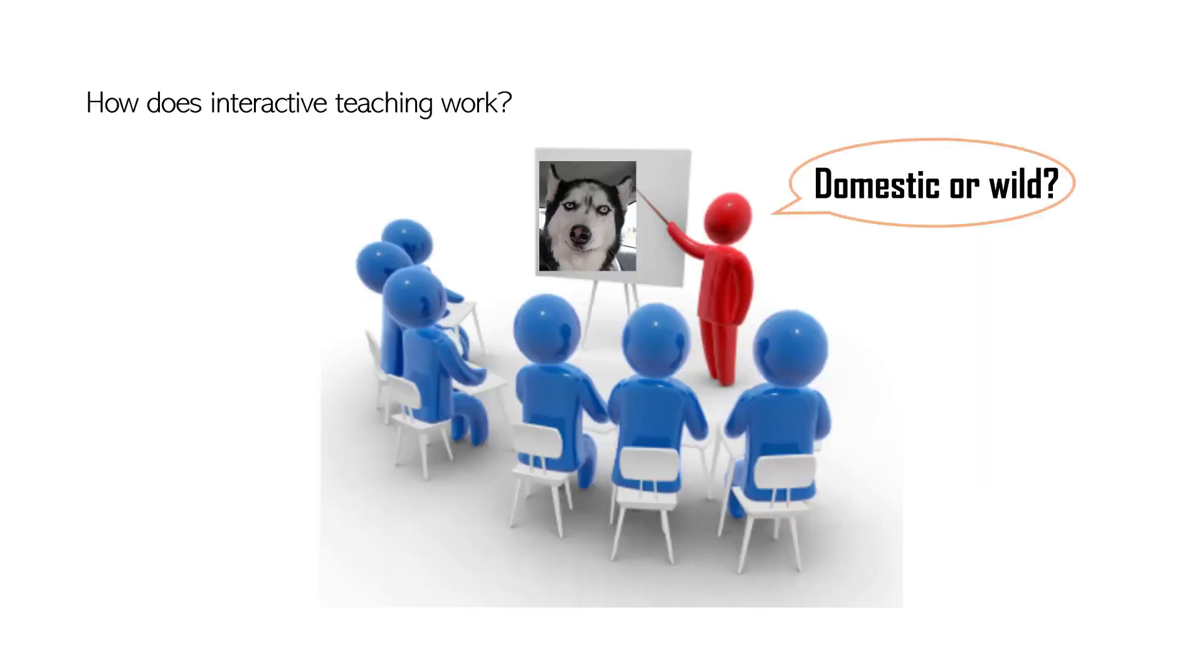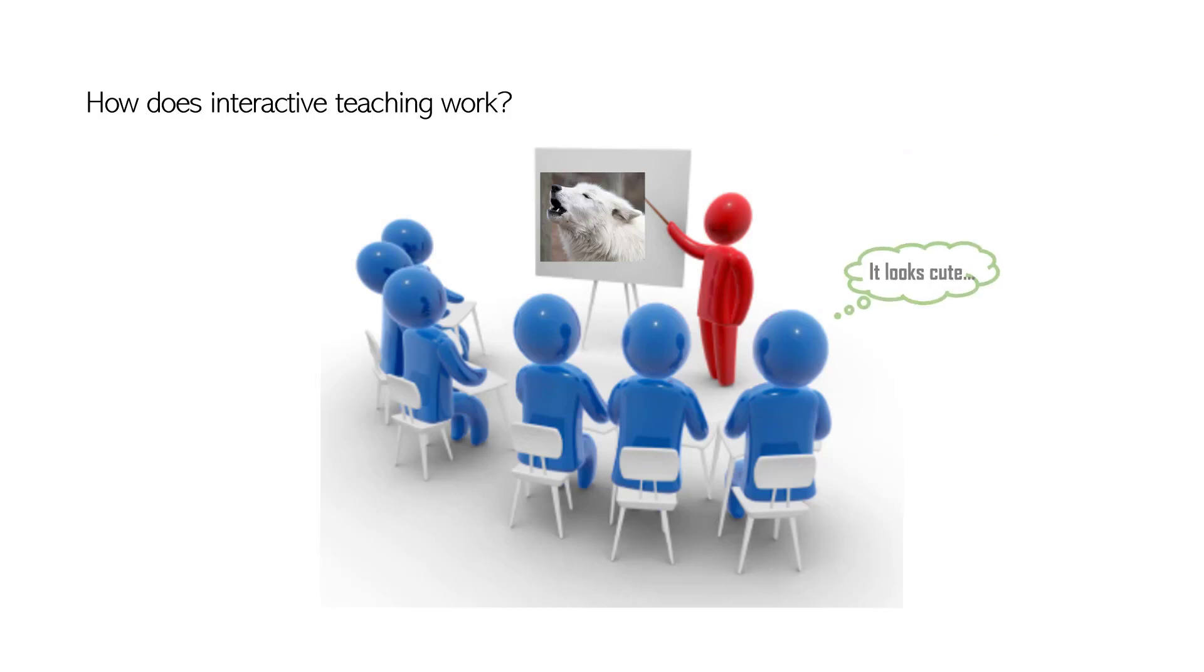Here is a simple example of the interactive teaching framework. First, the teacher will recommend a teaching example to the learner and ask the learner to give an answer. Then the learner will provide her label prediction on this example. Next, the teacher will reveal the true labels to the learner. The learner could confirm her answer by seeing the true labels, or sometimes the examples are difficult to label. The learner could also learn from their mistakes.